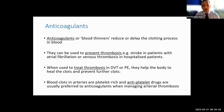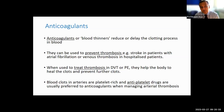Anticoagulants or blood thinners reduce or delay the clotting process, and so can be used to counter thrombosis. They can be used to prevent thrombosis — for example, to prevent stroke in individuals with atrial fibrillation. Atrial fibrillation is an abnormal heart rhythm, which is very common, affecting maybe one in 100 of the population, and particularly in the presence of additional risk factors, there is a heightened risk of stroke.